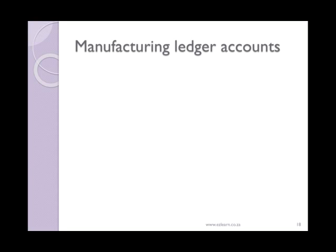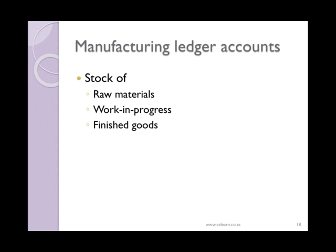Manufacturing ledger accounts. A manufacturer will keep a variety of different stock items compared to a trader. You will have a stock of raw materials as well as work in progress and finished goods stock. Keep in mind that in reality finished goods stock equates to normal trading stock for a trading business, as these are the goods that are available for sale.